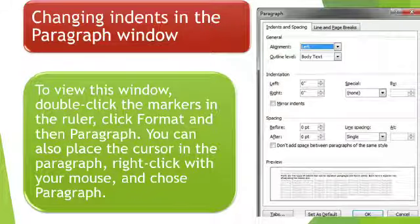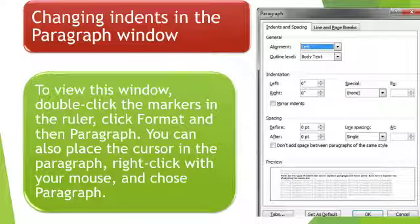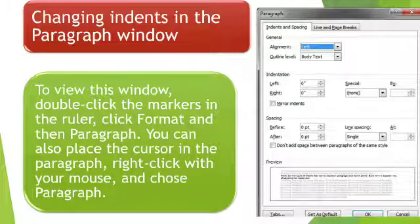To change the indent in the paragraph window, double-click the marker in the ruler, then click Format and then Paragraph. You can also place the cursor in the paragraph, right-click with your mouse, and choose Paragraph. A dialog box will appear as shown in the figure.